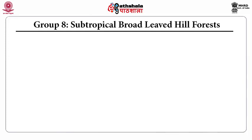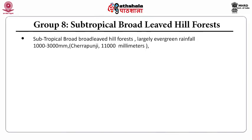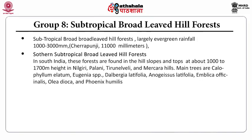Group 8 is represented by the sub-tropical broadleaf hill forests, which are largely evergreen. They occur in moderately high rainfall areas of 1,000 to 3,000 millimeters, but in Cherrapunji in Meghalaya, northeast India, rainfall is very high at 11,000 millimeters per year. The southern sub-tropical broadleaf hill forests in South India are found on hill slopes and tops at about 1,000 to 1,700 meters height in the Nilgiri, Palani, and Markara hills. Main trees are Calophyllum, Eugenia, Dalbergia latifolia, Anogeissus latifolia, Emblica officinalis, Olea dioica, and Phoenix humilis.